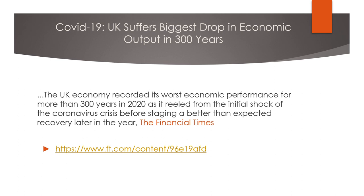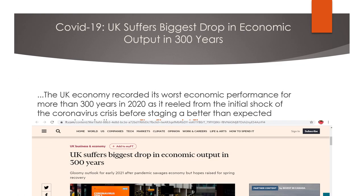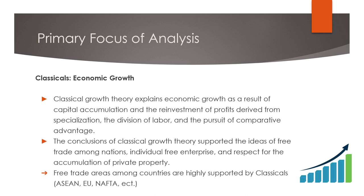The second distinction is the primary focus of analysis. For the Classicals, economic growth is what matters. Classical growth theory explains economic growth as a result of capital accumulation and the reinvestment of profits derived from specialization, the division of labor, and the pursuit of comparative advantage. The conclusions of Classical growth theory support the ideas of free trade among nations, individual free enterprise, and respect for the accumulation of private property. Free trade areas such as ASEAN, the European Union, and NAFTA — comprising the US, Mexico, and Canada — are highly recommended by the Classicals.